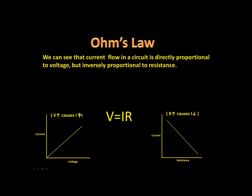Here's what we should understand: current flow in a circuit is directly proportional to voltage but inversely proportional to resistance. We should also remember the equation for Ohm's law: V equals I times R, voltage equals current times resistance. From the graphs — as voltage increases, current increases; as resistance increases, current decreases. Resistance and current are inversely proportional to each other.